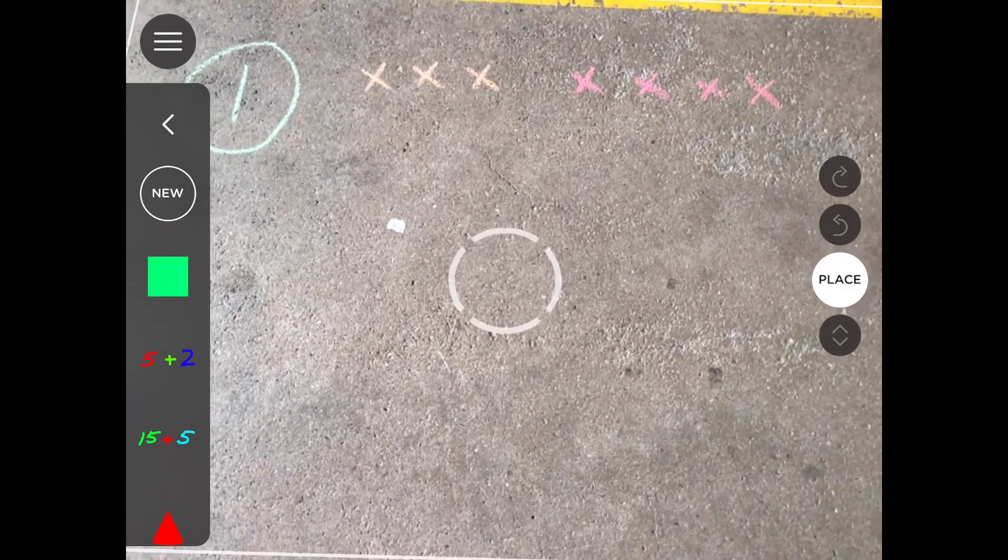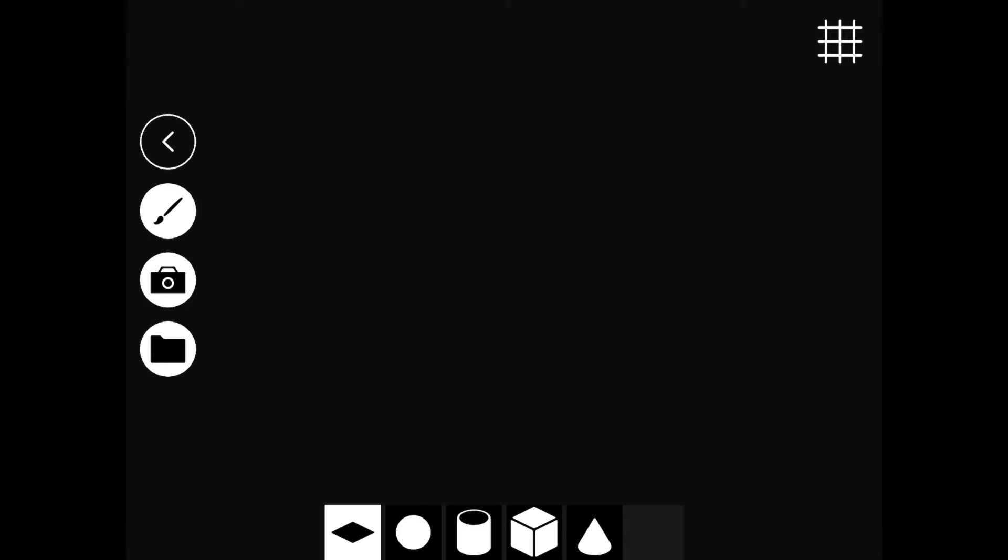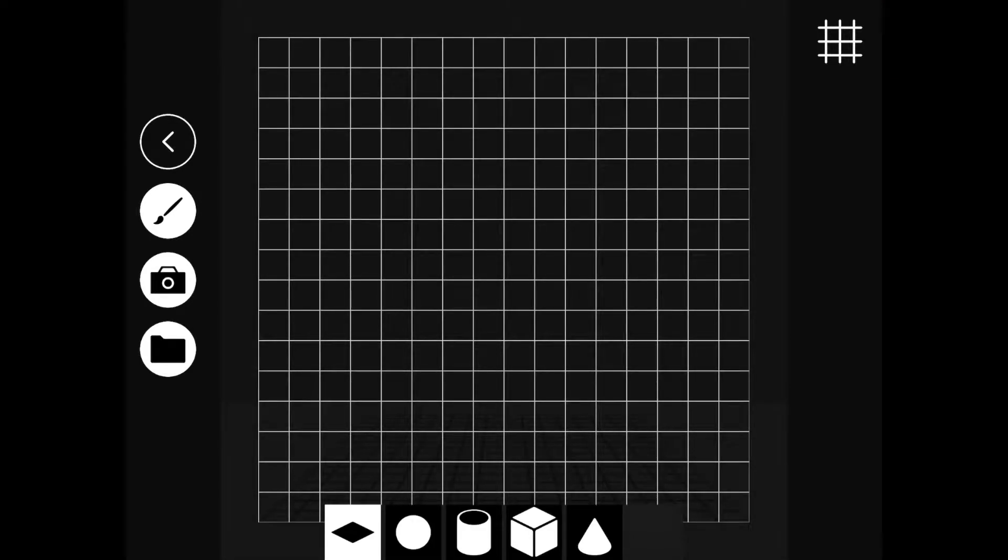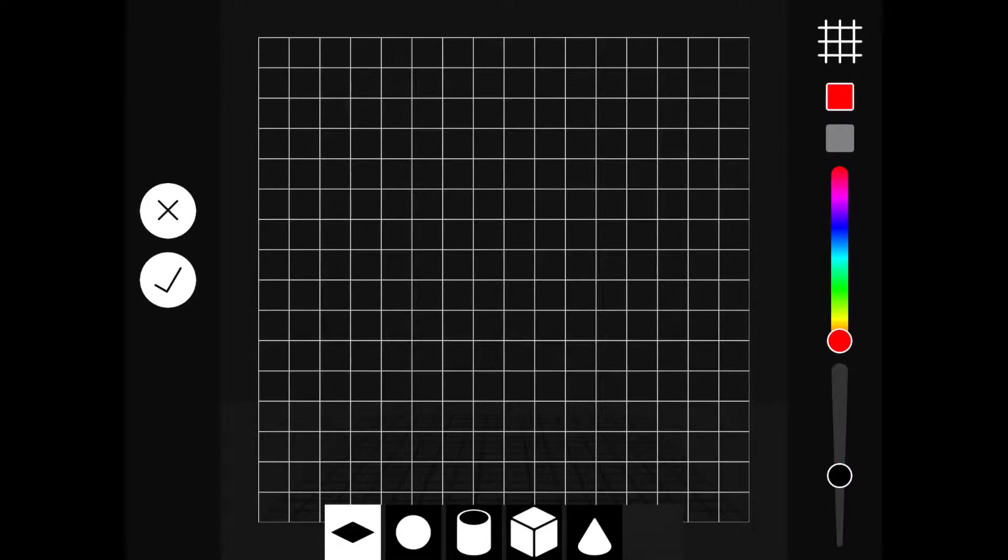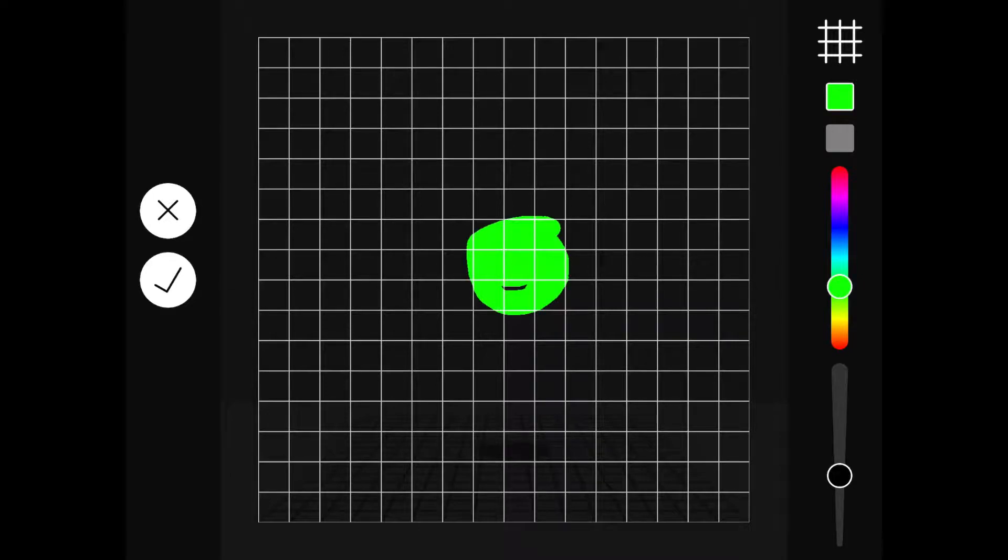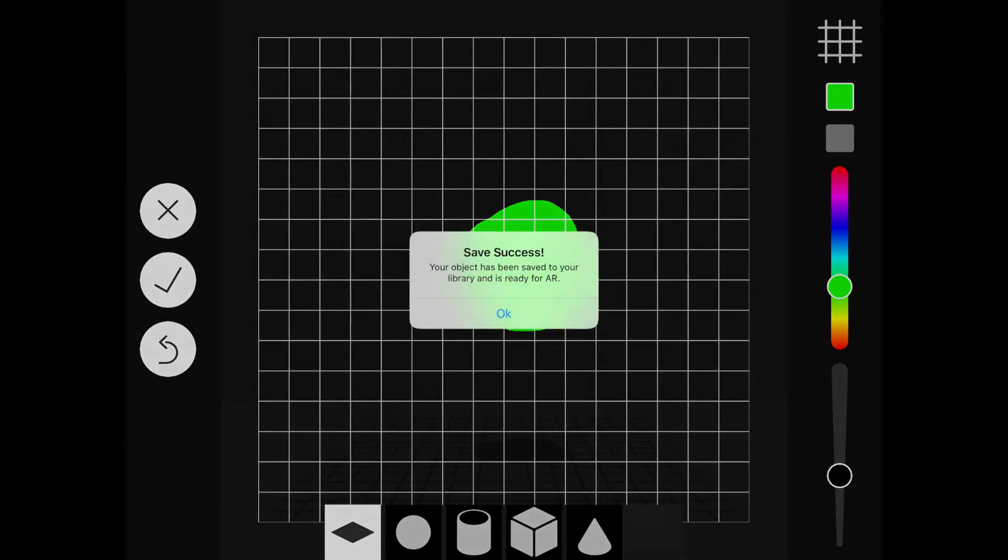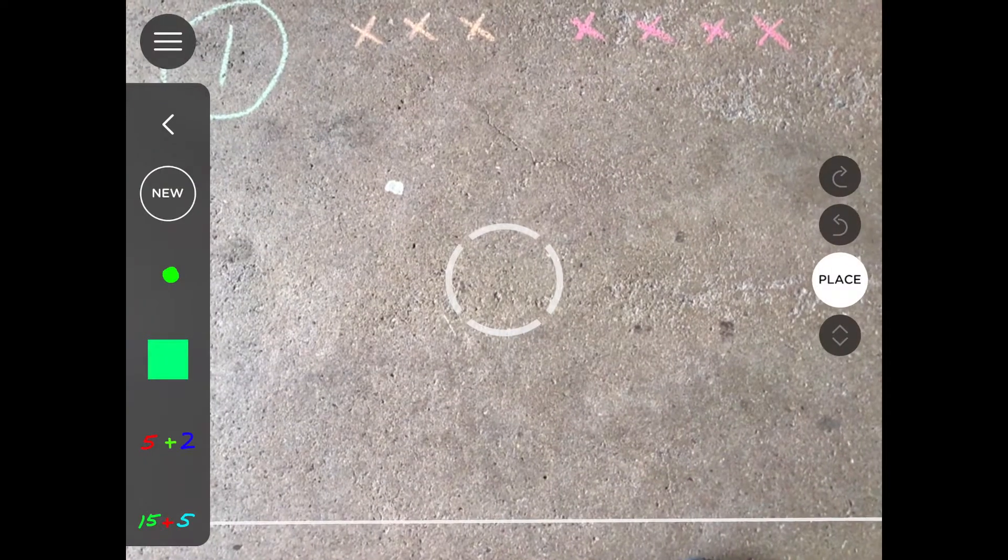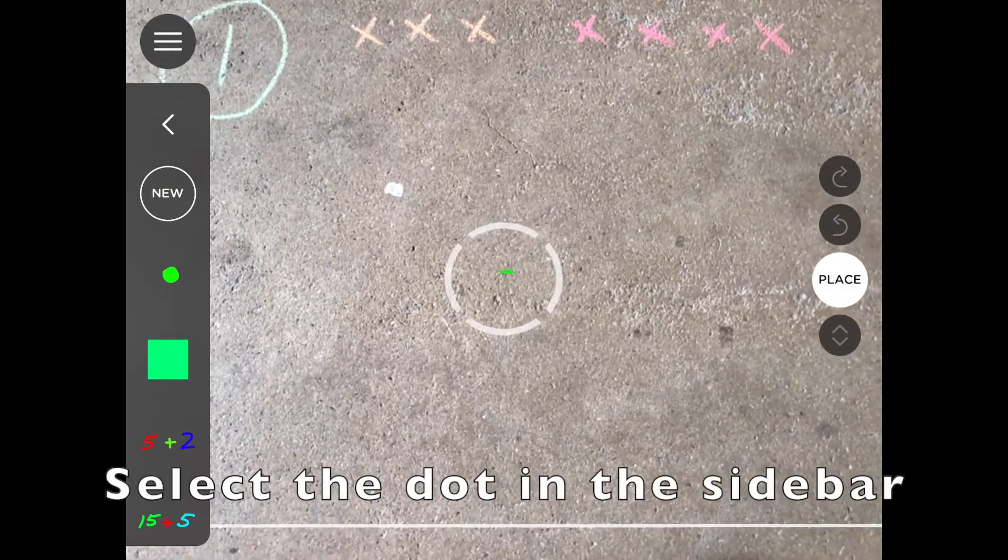So we're going to go and create a little dot to begin with, so we push new, then to paint our little dot we push the paintbrush and then just select a color. We're going to make a little dot, nice and easy, just like that, then push the tick. Go OK and now we have a dot ready to go.